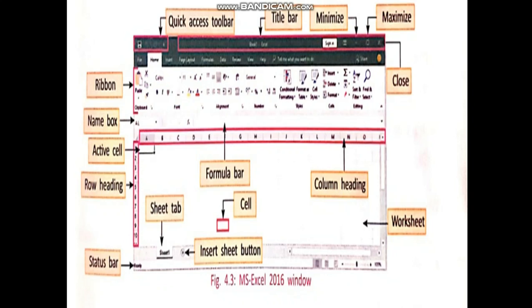And the vertical divisions of this worksheet are known as columns. Columns are labeled A, B, C, D, E, like that. And columns go up to XFD.